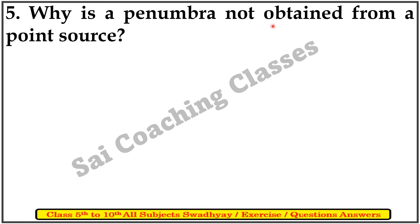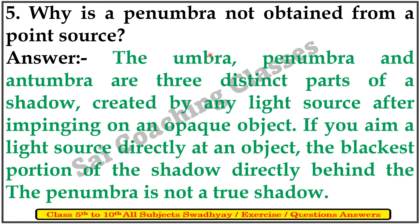Why is penumbra not obtained from a point source? The umbra, penumbra, and antumbra are the different parts of the shadow created by any light source. After light impinges on an opaque object, if the light source is directly in front of the object, the backside portion of the shadow directly behind the object is not a true penumbra. Penumbra is not obtained from a point source.